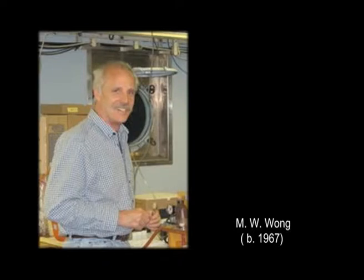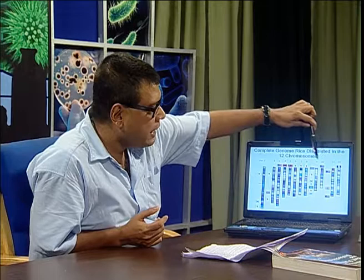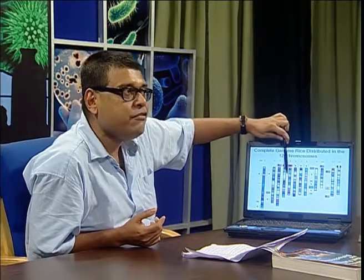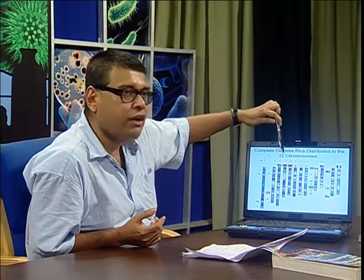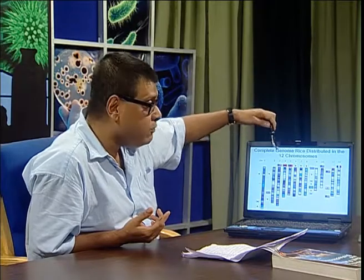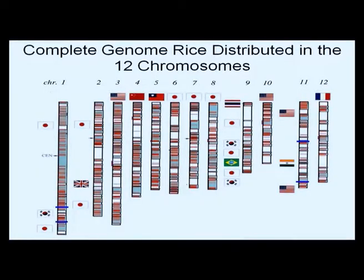A very important discovery was carried out in 2002 — a declaration by Wong et al. from China. They mapped 92% of the famous rice genome, clearly indicating that there are 12 chromosomes with bands indicating specific genes. Knowing the rice genome helps us to modify and produce transgenic rice. The flags of different countries indicate these nations were involved in the rice genome mapping project, but ultimately the declaration came from China.